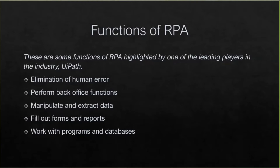Some of the functions of RPA, just to touch on a few by UiPath: elimination of human error, perform back office functions, manipulate and extract data, fill out forms, and work with programs and databases. It allows 100% accuracy and lets you manipulate, extrapolate, and organize data in various programs like Excel, and it is a cost-effective method. These robots are capable of mimicking many, if not all, human user actions — they log into applications, move files and folders, copy and paste data, fill in forms, extract structured and semi-structured data from documents such as PDFs, emails, or forms, and scrape browsers as well.